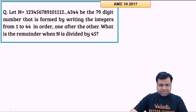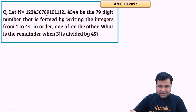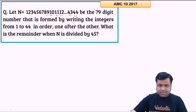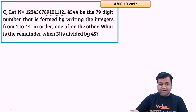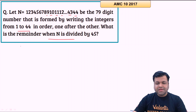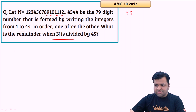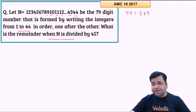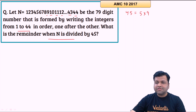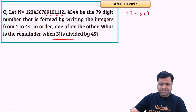Let's proceed to the next question. N is the 79-digit number formed by writing the integers from 1 to 44 in order: 123456789101112...4344. We need to find the remainder when N is divided by 45. Since 45 = 5 × 9 and these are coprime, a number is divisible by 45 if and only if it is divisible by both 5 and 9. The divisibility rule of 9 is that the sum of digits must be divisible by 9.